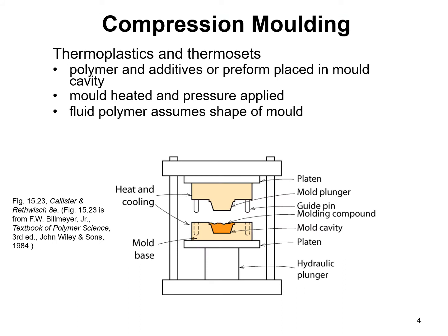The first type of processing method for both thermoplastics and thermosets is called compression molding. As you can see in the illustration, we have a mold — you have to design your mold properly for the cavity depending on the end product. We have both heating and cooling elements, and platens on the top and bottom, as well as a guide pin and the molding compound. The polymer and additives or preform are placed in the mold cavity, the mold is then heated and pressure applied, and the fluid polymer assumes the shape of the mold.